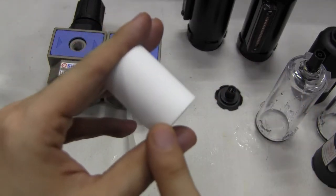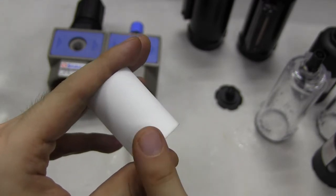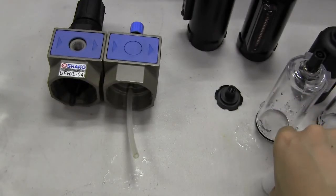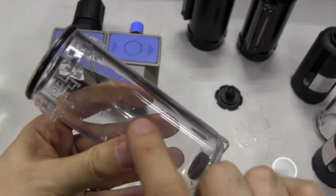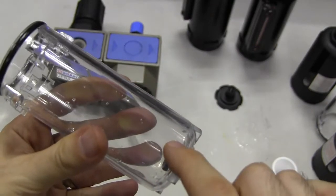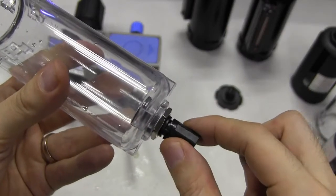We have 5 micron, we also have 40 micron, and we also have brass material ones for 5 micron and 40 micron. For the filter bowl, I've seen some cheap brands where over a period of time the bowl cracks, so make sure you have a sturdy bowl.